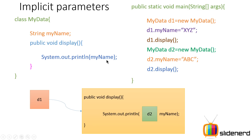When I say 'd2.display()', it is concerned with displaying the myName that belongs to d2. In other words, at runtime Java looks at the variable myName and checks which object called the method. If it's d1, it will work with data that belongs to d1. If it's d2, it will work with data that belongs to d2. That is what implicit parameters are all about.